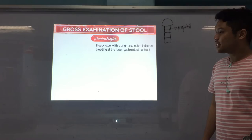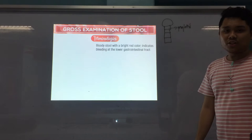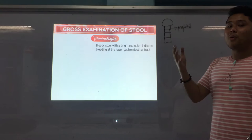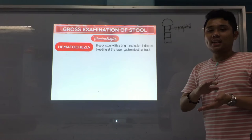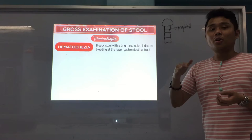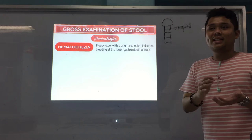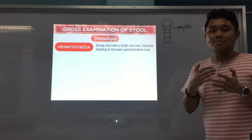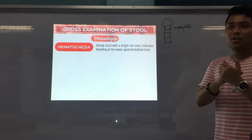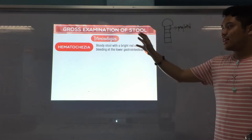Now we go with some terminologies. Bloody stool — when you have a stool that is bloody and the color is bright red, it indicates that the lower GI tract is bleeding. Bright red stool is termed hematochezia. It indicates lower GIT bleeding because your blood is still fresh — it did not undergo any oxidation or changes. That is why the color of the stool is bright red.